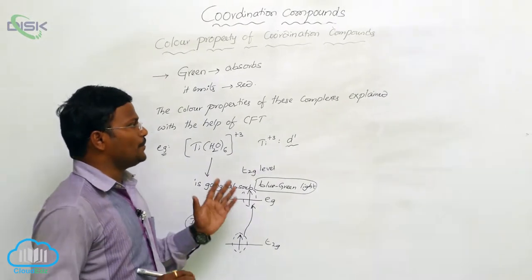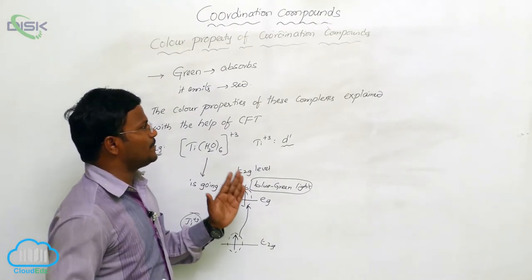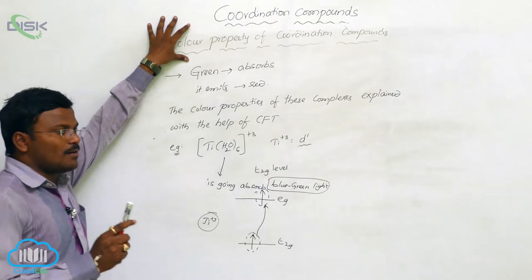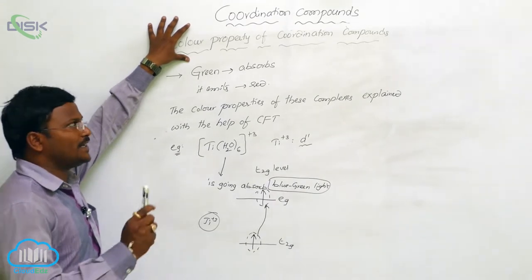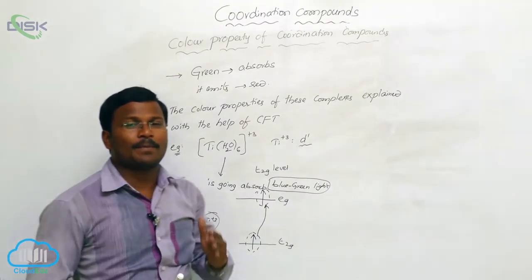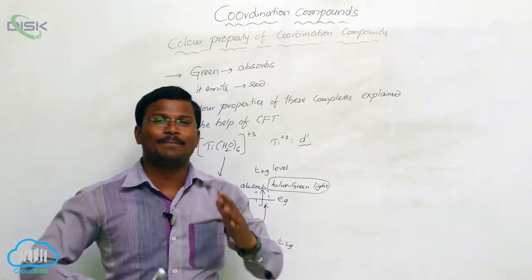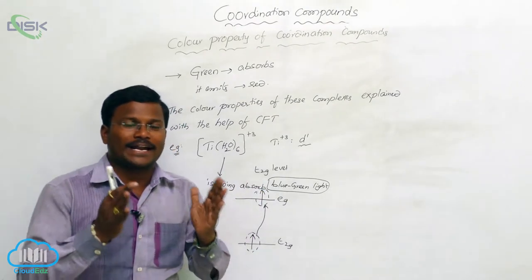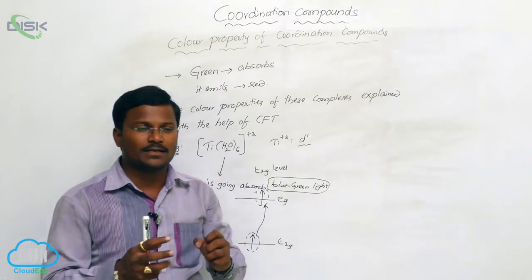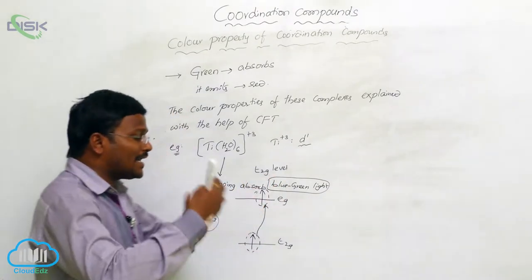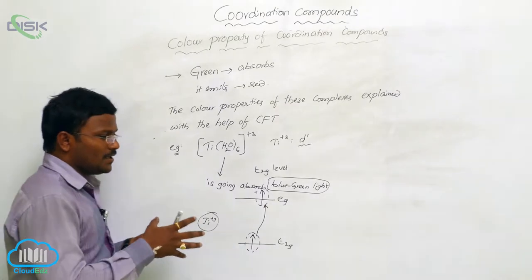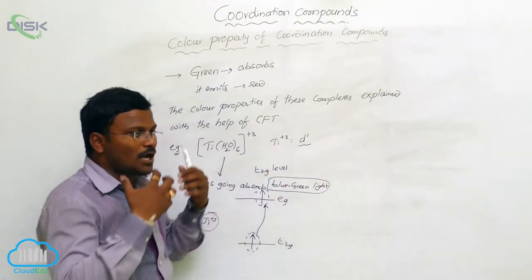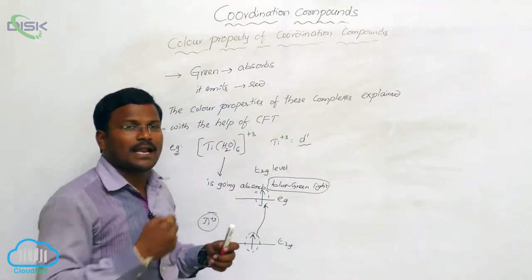As per the earlier discussion, the most important character exhibited by coordination compounds is its color properties. Coordination compounds show a wide variety of colors. The color property depends upon the absorption of specified wavelengths of electromagnetic radiation, especially visible light, and emission of another type of wavelength light. This is why metal complexes absorb different light from what they emit.